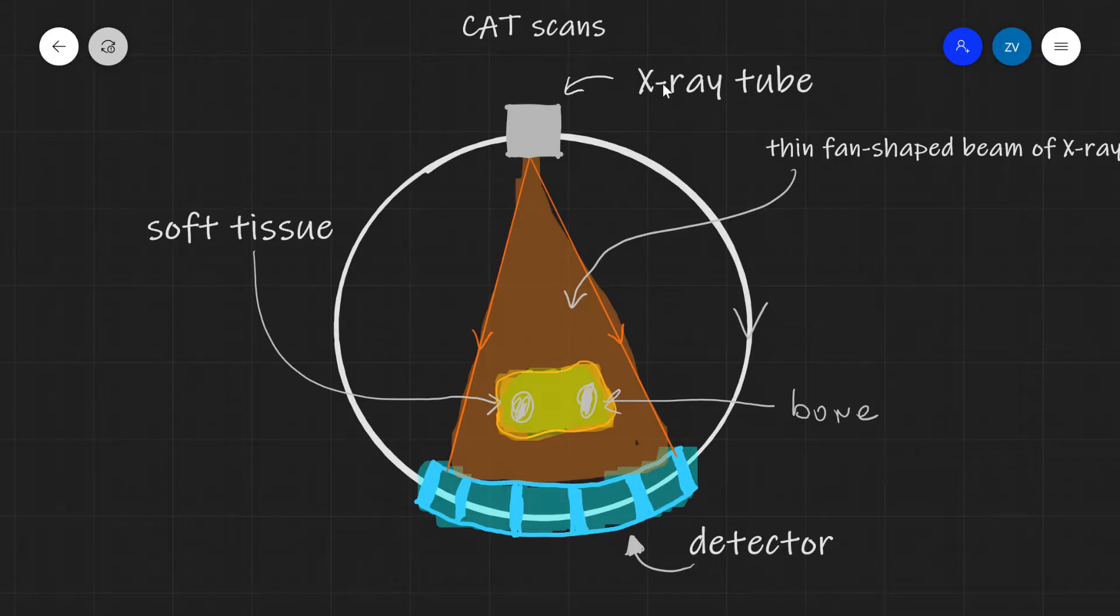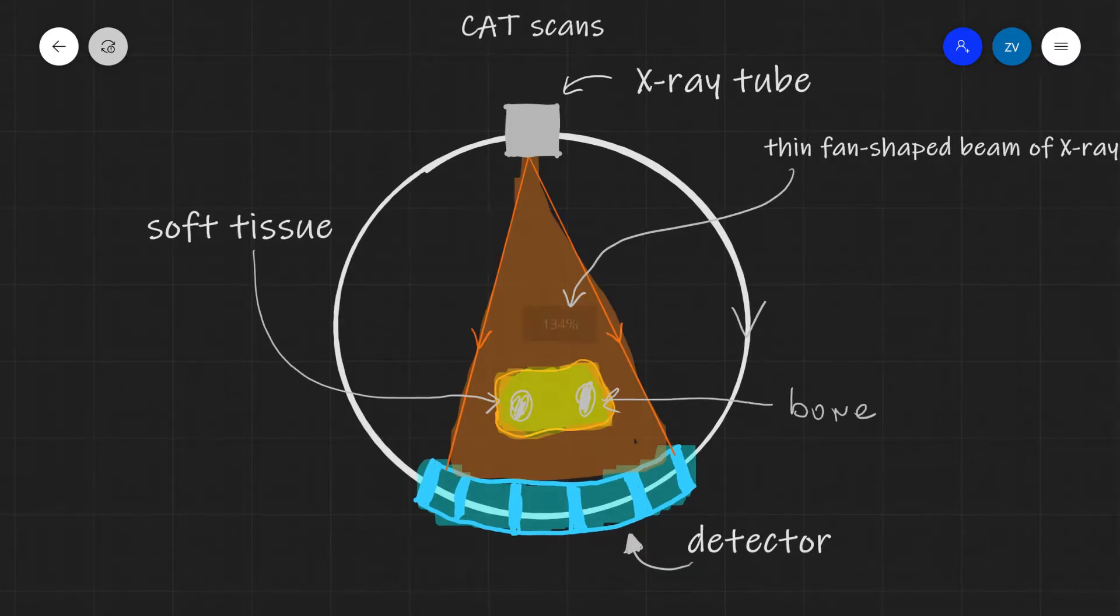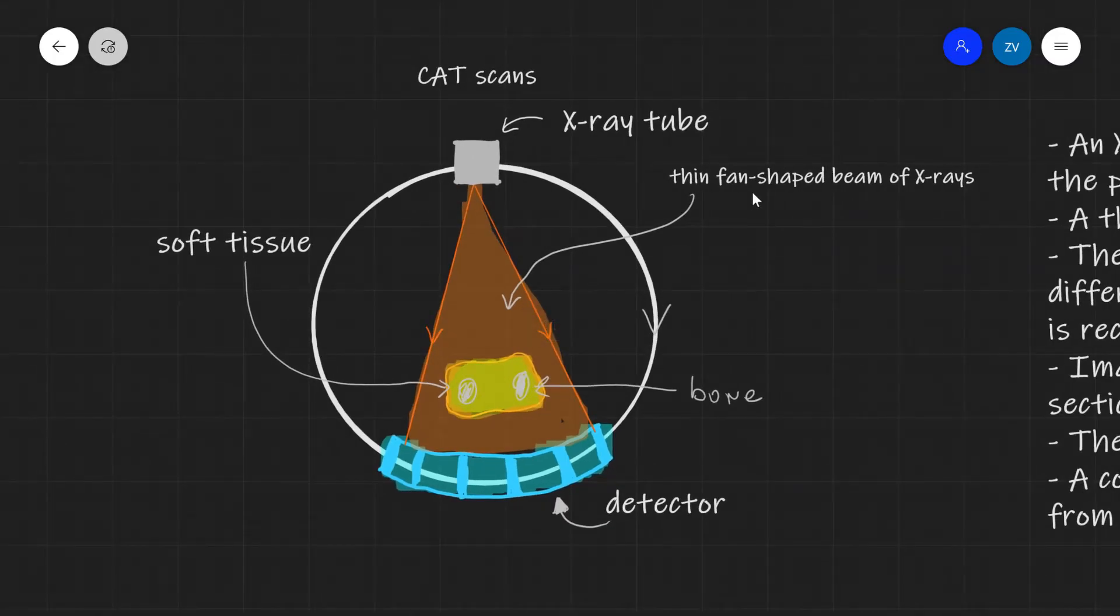But the x-ray tube produces x-rays. In particular it produces a thin fan-shaped beam of x-rays. This goes through the patient and for instance this over here, right over here, is the cross-sectional area of a patient.